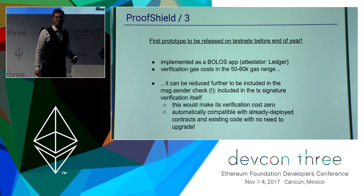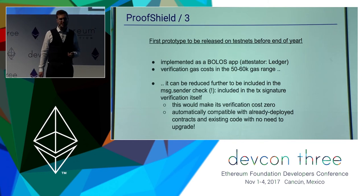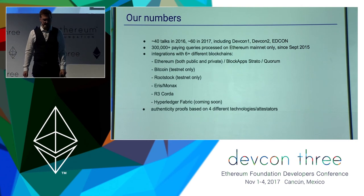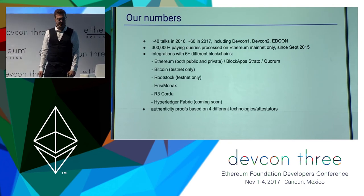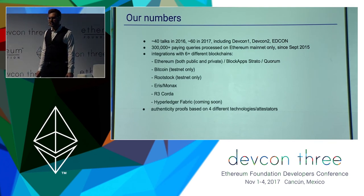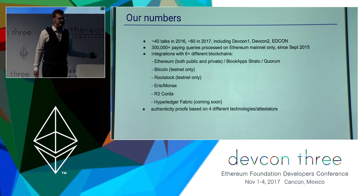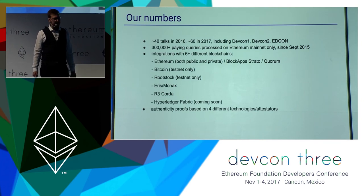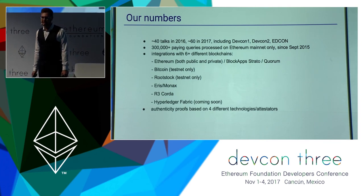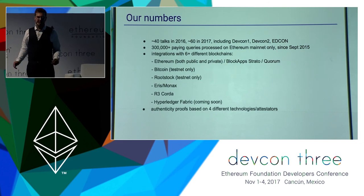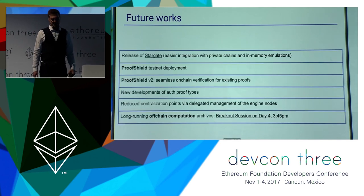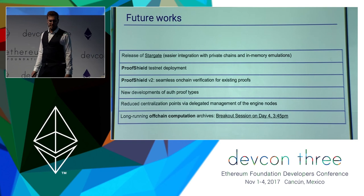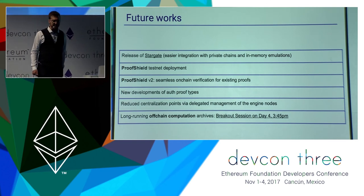Oraclize is the most widely used Oracle service on the blockchain. We have sent over 300,000 queries on the mainnet, with a typical daily range of 1,000 to 5,000 transactions per day on mainnet alone. We have integrations with other blockchains as well, but Ethereum is where we started and where most usage comes from. We are using different technologies and attestation techniques — this is still a continuous research problem.